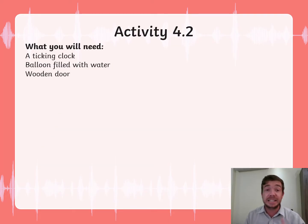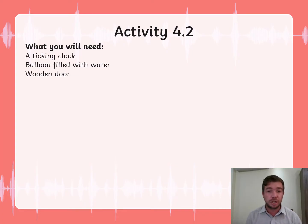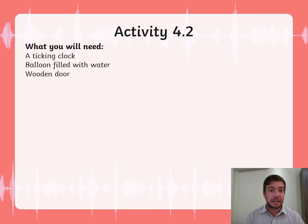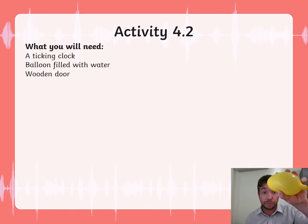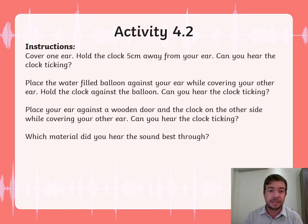In Activity 4.2, you need a few things for the experiment. First of all, you need a clock. Then you also need a balloon filled with water and a wooden door — or you can even use your table if needed. What are the things we need to do?